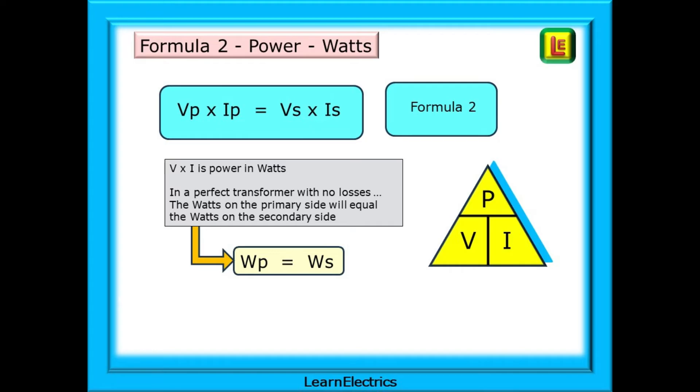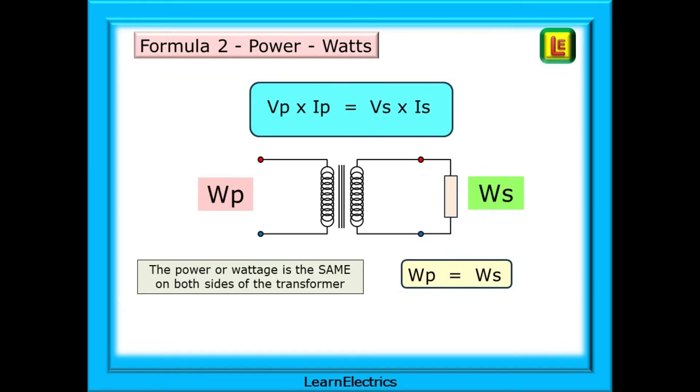Formula number two is for power or watts. V times I is power in watts and we should already be familiar with the power triangle shown on the right. In a perfect transformer with no losses the watts on the primary side will always equal the watts on the secondary side. The power or wattage is the same on both sides of the transformer.